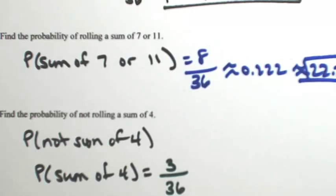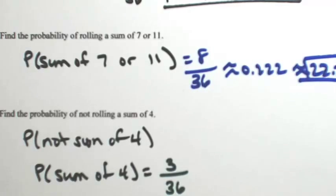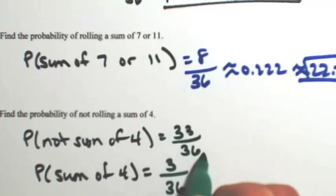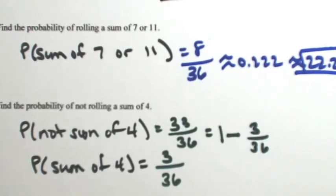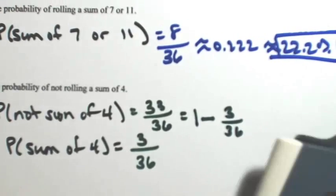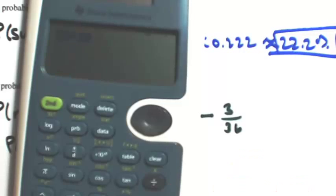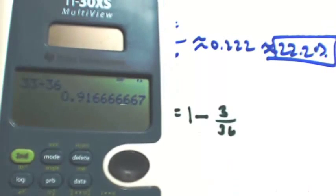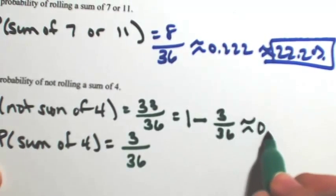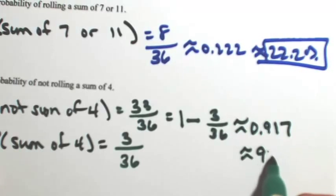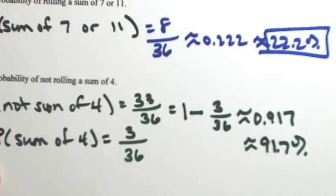So if three of them are four, then 33 of them are not four. This is an example of using complements. So if I want to find not sum of four, this is the same thing as one minus the three over 36, which is going to be 33 over 36. So then 33 divided by 36 is 0.916 repeating, so about 0.917. So about a 91.7% chance that you're not going to get a four.